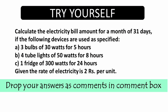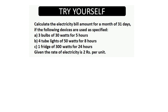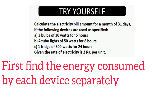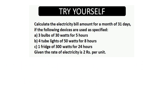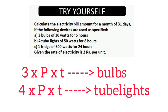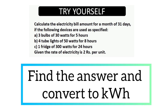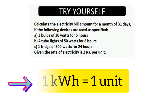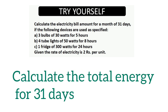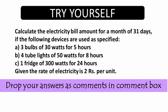Here is one more problem for you — try it yourself and drop your answers as comments in the comment box. There are 3 appliances: bulb, tube light and fridge. First calculate the energy consumed by each appliance separately. For 3 bulbs use 3 × P × T, for 4 tube lights use 4 × P × T, and for 1 fridge just use P × T. Find the result in watt hour, convert to kilowatt hour and find the units. You are asked to calculate the electricity bill for 31 days, so multiply the total energy by the rate of electricity, which is Rs 2 per unit.